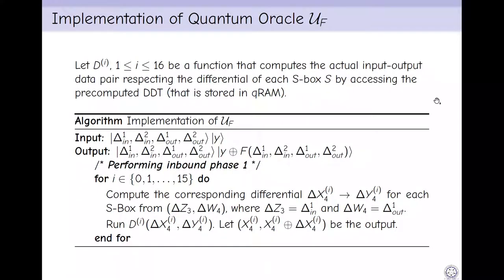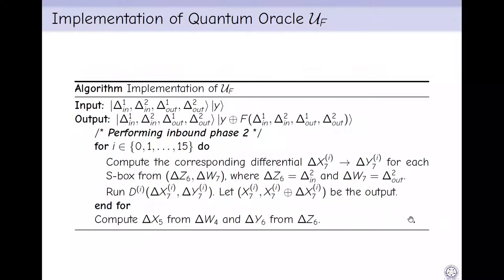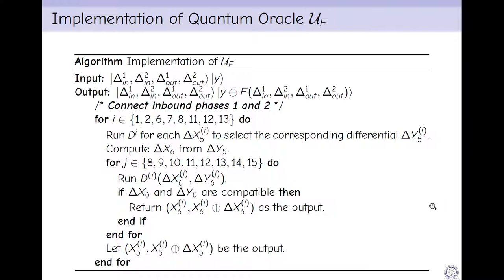How to implement the quantum oracle UF? We define a function Di that computes the actual input-output data pair respecting the differential of each S-box by accessing the pre-computed DDT that is stored in QRAM. In the algorithm implementing UF, the input is (Δin1, Δin2, Δout1, Δout2, y) and output is y updated with y⊕f on input-output differences. We perform inbound phase 1: for i=0 to 15, compute the differences Δx3, Δz3, Δw4 and compute the corresponding differential. Then we run Di which gives the output x4[i], x4[i]⊕Δx4[i]. Similarly, in inbound phase 2, we get the output x7[i], x7[i]⊕Δx7[i].